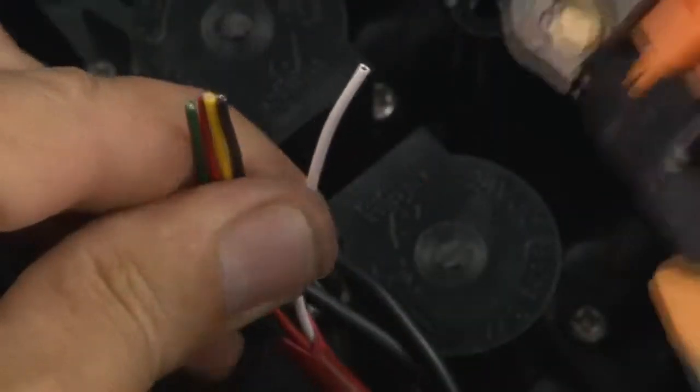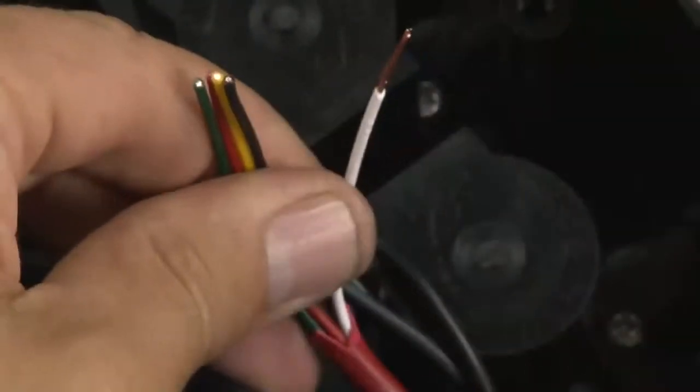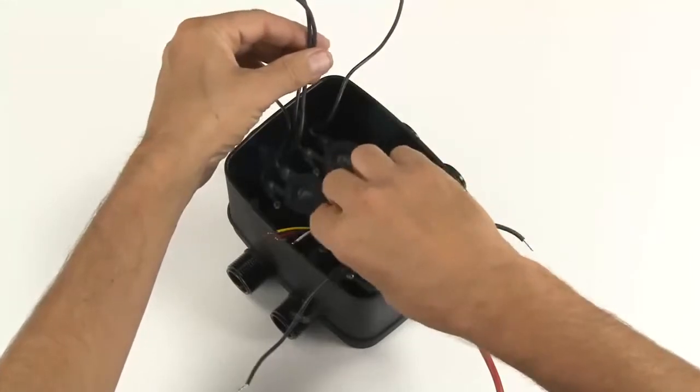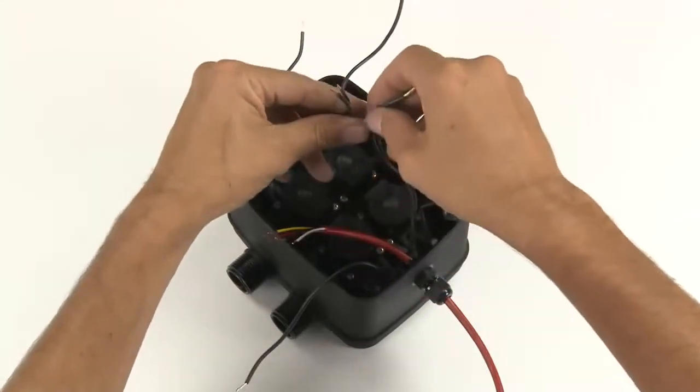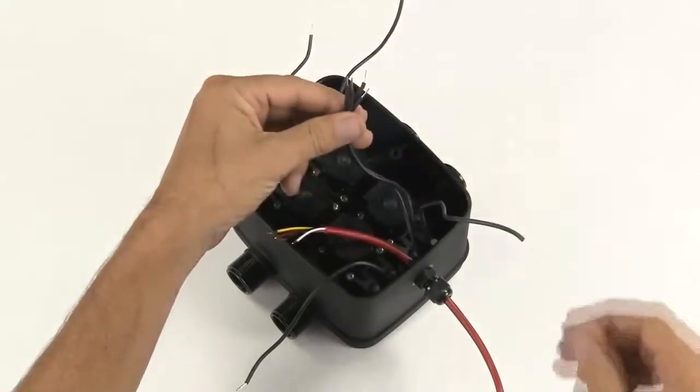Then take your wire strippers and trim 15mm from the end of each wire. Take one wire from each solenoid. These will connect via your common wire back to the controller. The wiring for the valves is not polarity sensitive, so you can choose either wire from each solenoid.